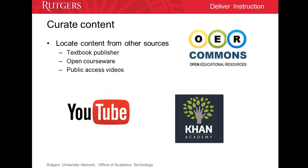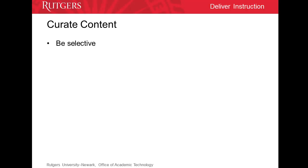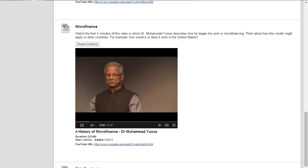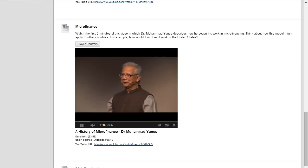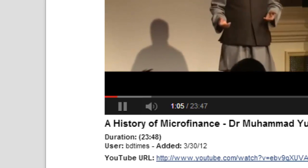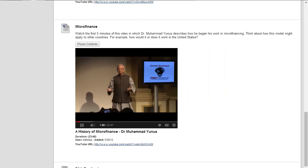You may also want to consider supplementing your course with media you curate from other sources. For example, your textbook publisher might provide video segments or websites that relate directly to textbook topics. Professional organizations, non-profit organizations, and even YouTube can be great sources for media that creatively explain topics related to your discipline. When you select content from other sources, be selective. You might find an outstanding online presentation from a respected professional in your field, but only a portion of the recording applies to your course objectives. If you provide students with the minute markers of relevant sections, students can focus their attention on the portions that apply to what they're learning, and have the option of reviewing the entire recording.